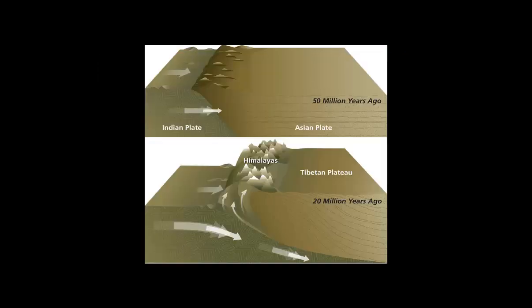A good example of the type of subduction we're talking about is illustrated here. This is when the Indian plate is subducting, and it's going under the Asian plate. And you can see when they start to meet, 50 million years ago, the picture on top, they're more or less the same.